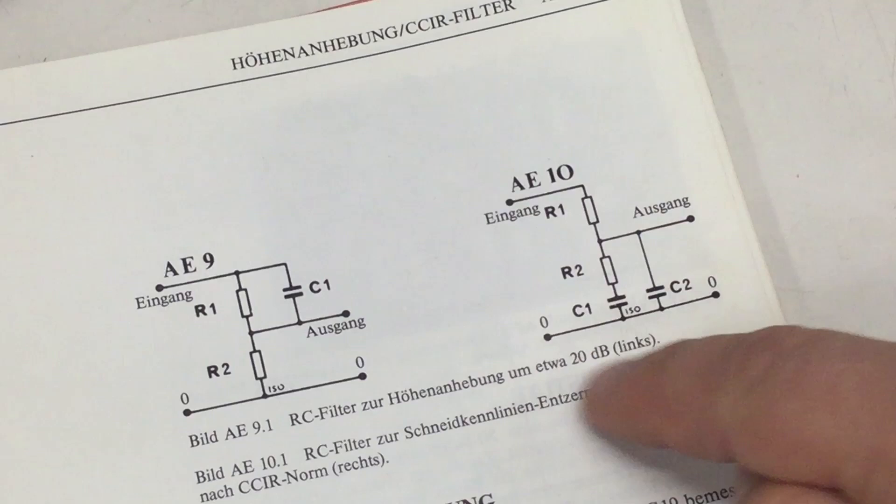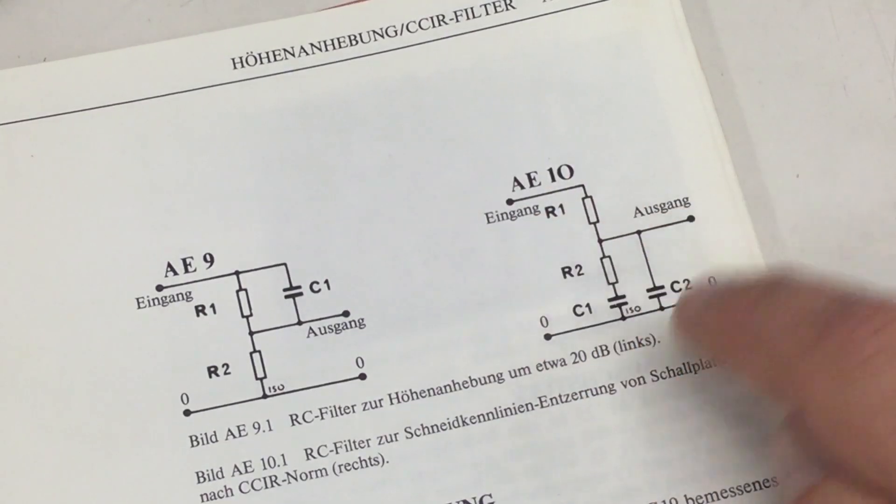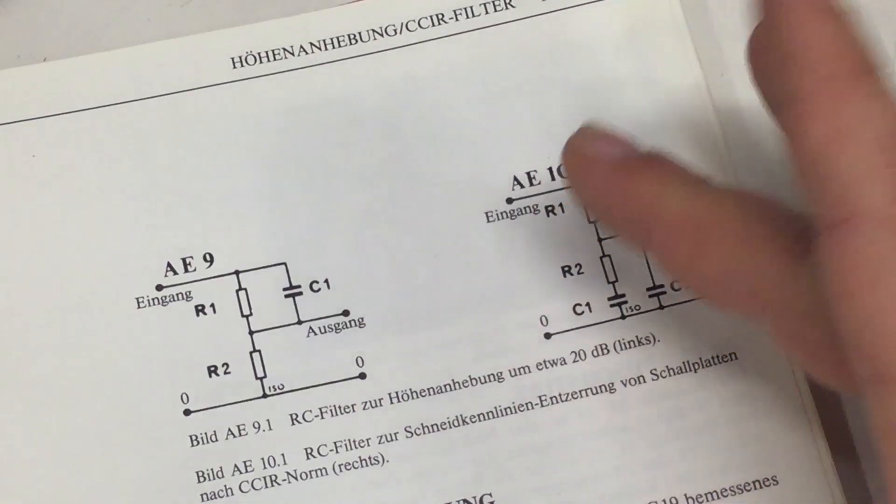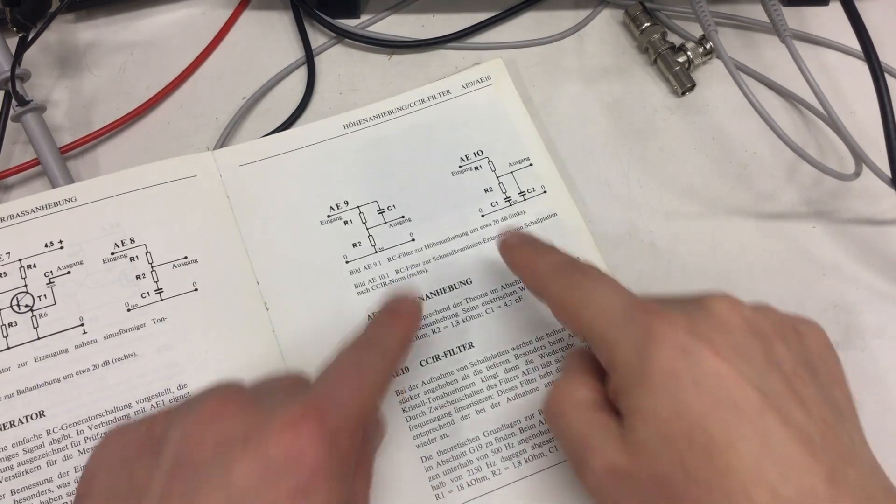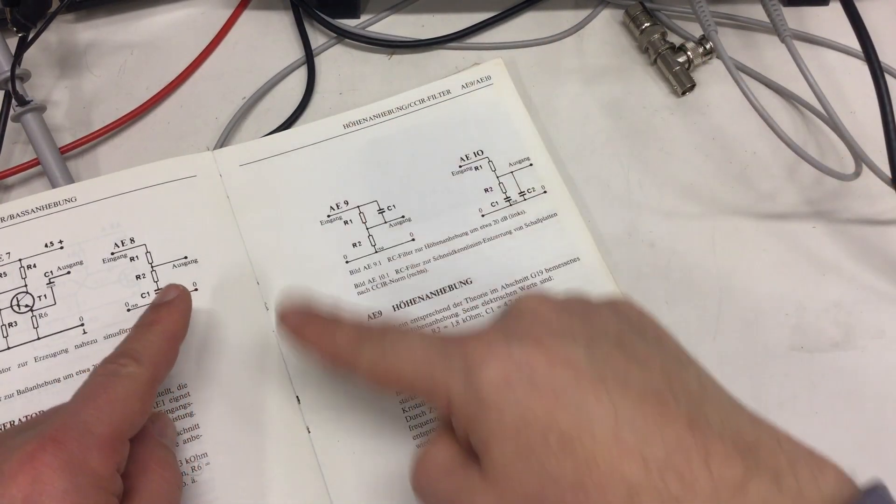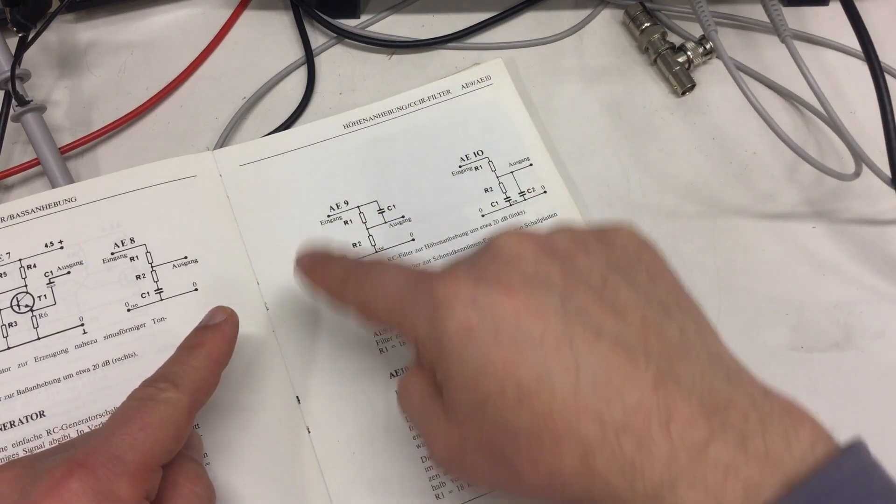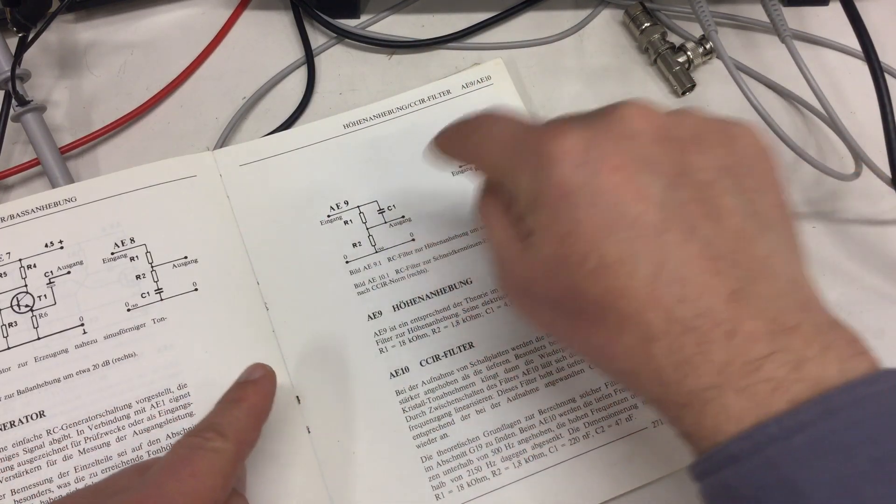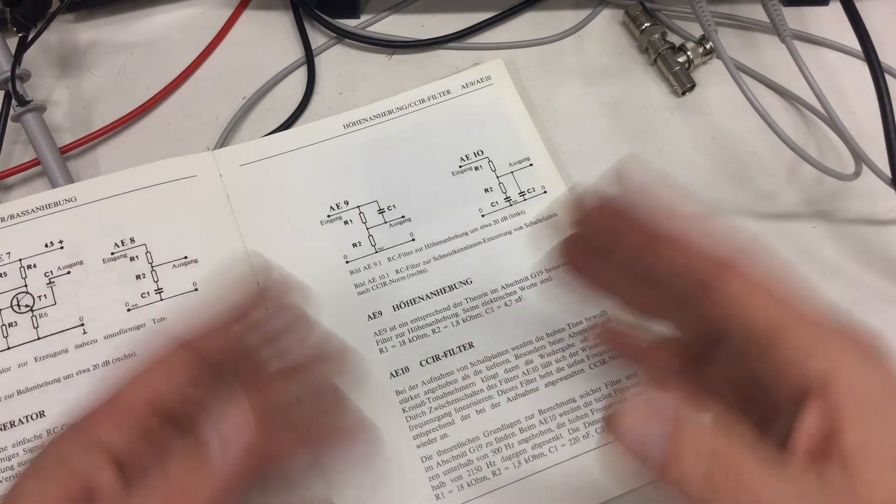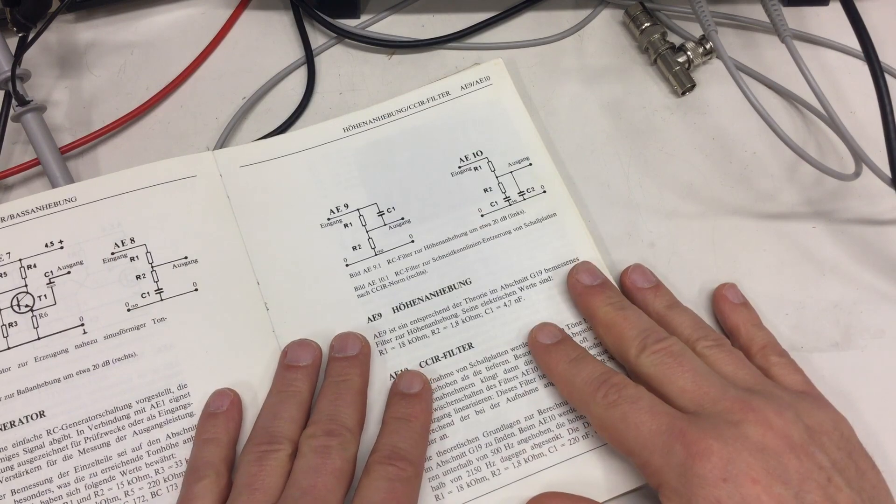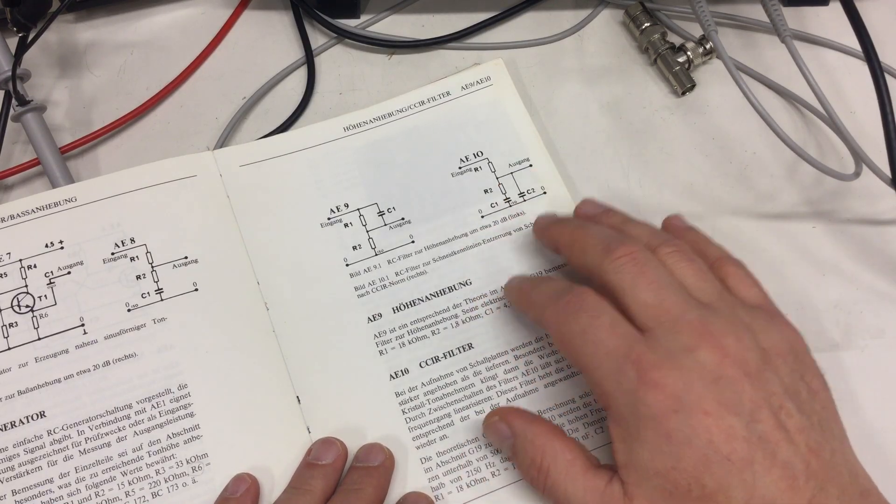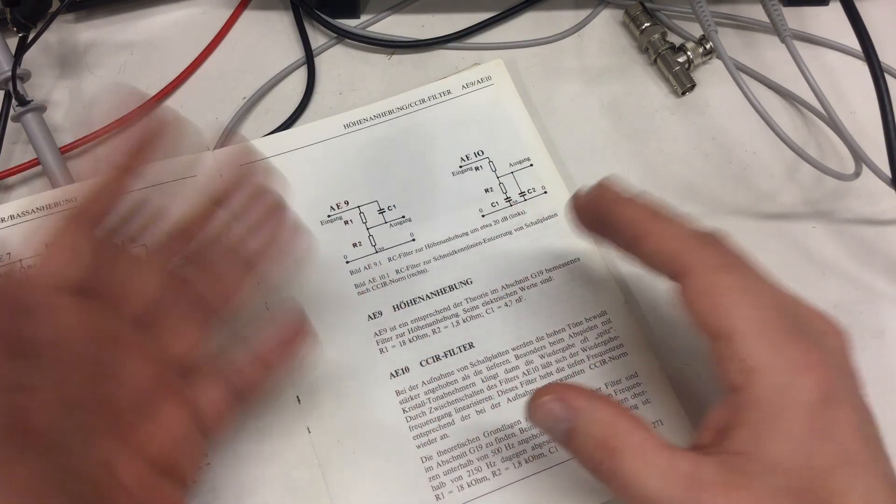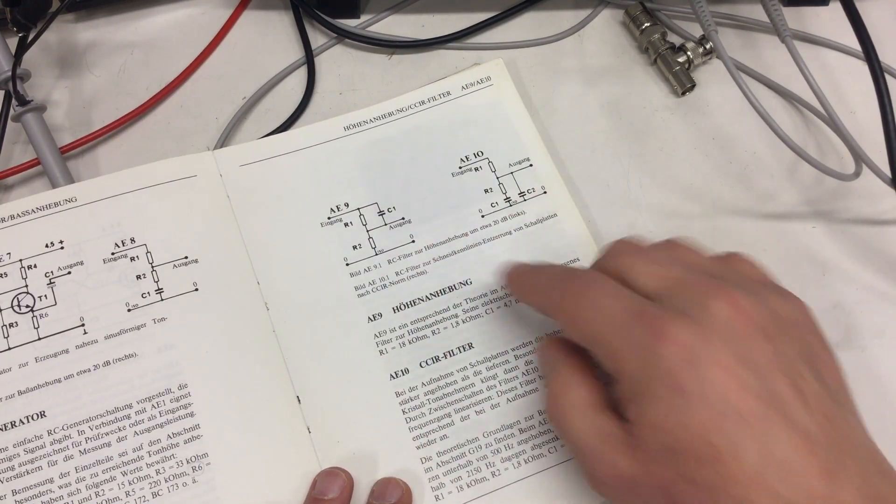And then we have something that nobody of you will probably know, but that's a CCIR filter. That adjusts the frequency of records, and I'm talking vinyl records, the black discs with the grooves in it cut in a spiral that are read with a little needle.